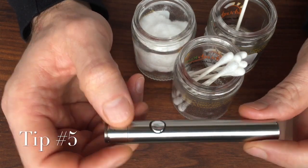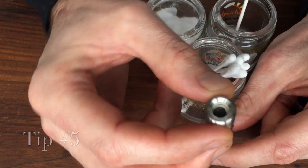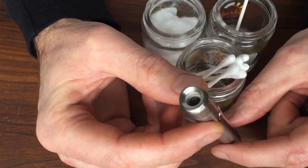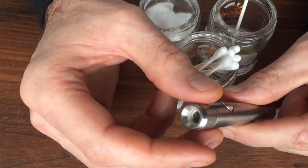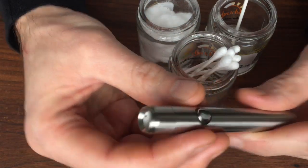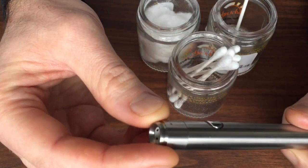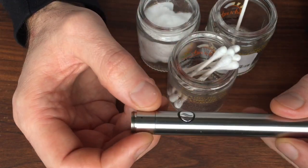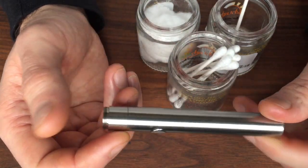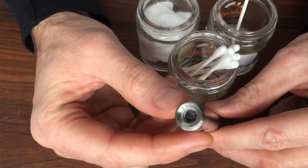Tip number five: less is best. Fill only the amount that you're going to need for between three to five hits. If you fill it up too high at the intake holes, it's going to spill out and make it all clogged and harder to hit and you're going to have to clean it more often. There you go. Five simple tips on how to keep your G pen clean and keep that bowl lasting a long time.